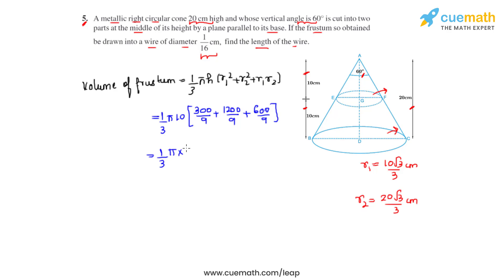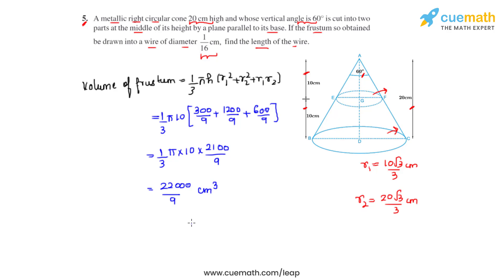Simplifying the terms inside the brackets gives 2100/9. On further calculation, the final answer for the volume of the frustum is 22000/9 cubic centimeters.